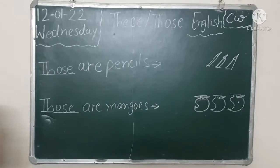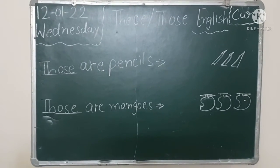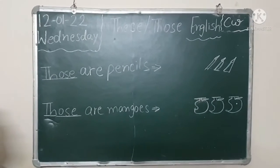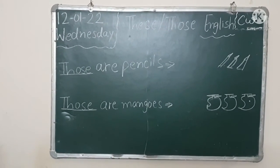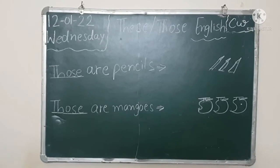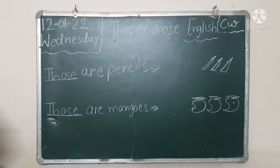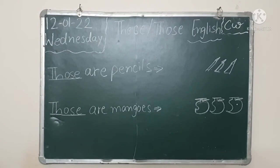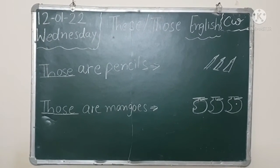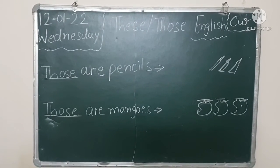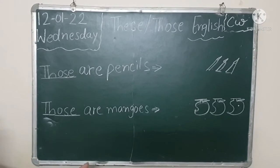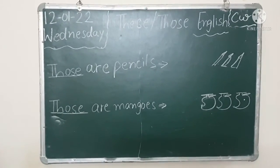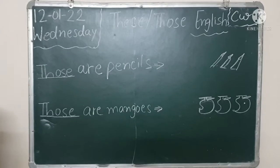जो भी चीज़ हमारे पास होती है और quantity में होती है, only single के लिए हम these or those use नहीं करते. Single object, single name, single person, single animal के लिए हम this और that use करते हैं. But more than one के लिए हम these and those use करते हैं. When objects are near to us — these. When objects are far from us — those. Clear?